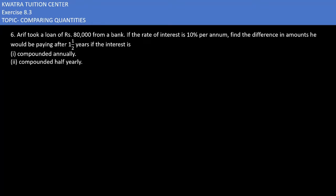Now we'll be starting with the sixth one. It says Arif took a loan of 80,000 from a bank. The rate of interest is 10%. Find the difference in amount he would be paying after one and a half years if the interest is compounded annually versus half-yearly.